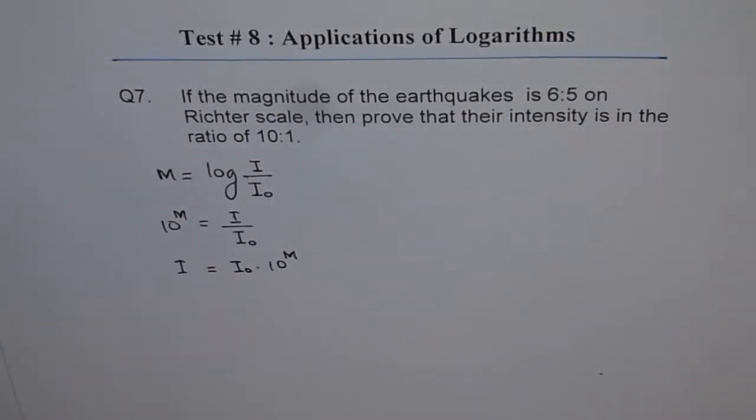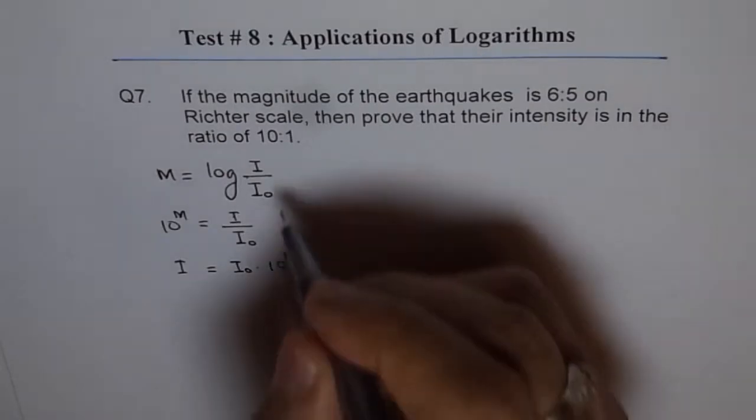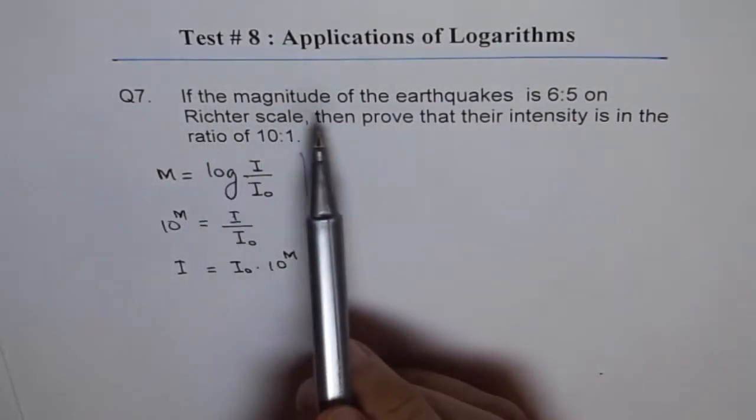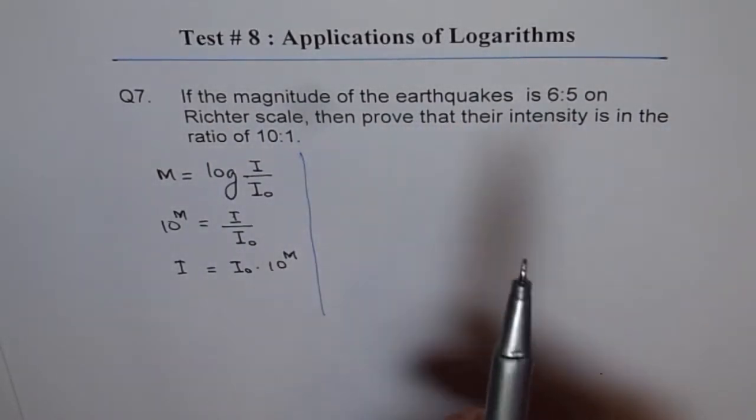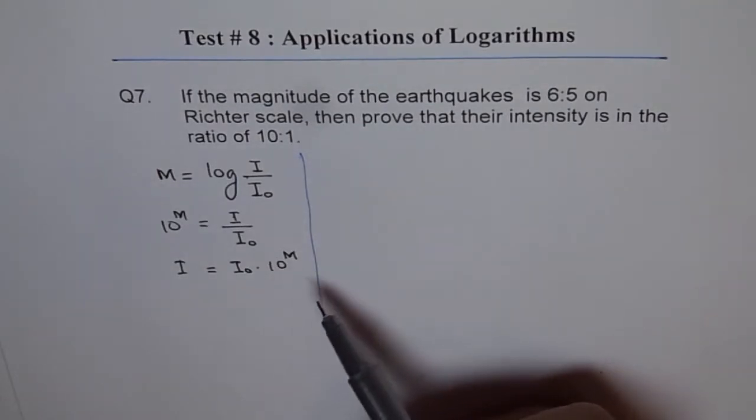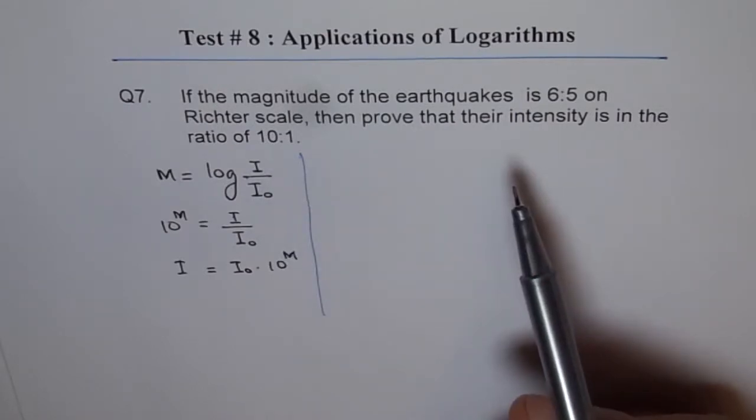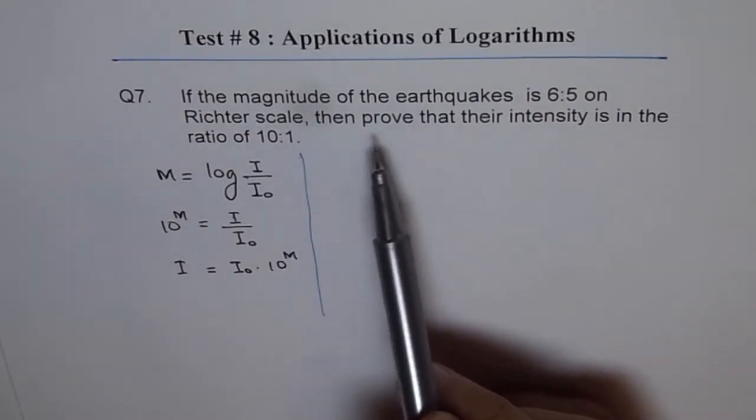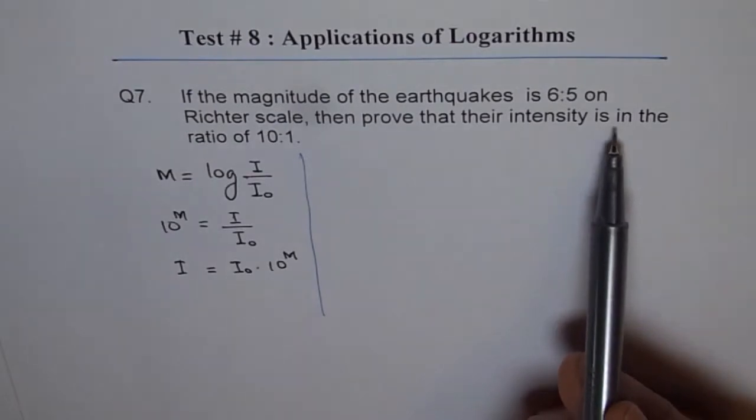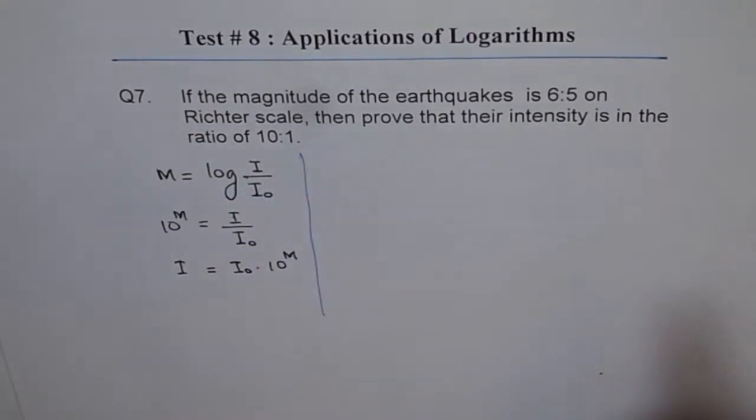Now, in this question, what is given to us is that if the magnitude of earthquake is 6 to 5, that means if magnitude of M₁ is 6 and M₂ is 5, for example, then prove that the intensities is 10 to 1.